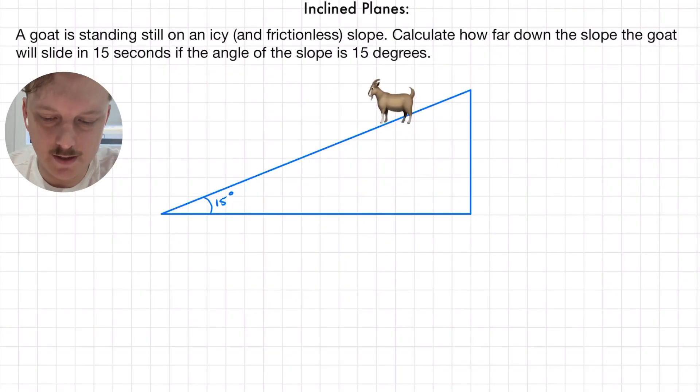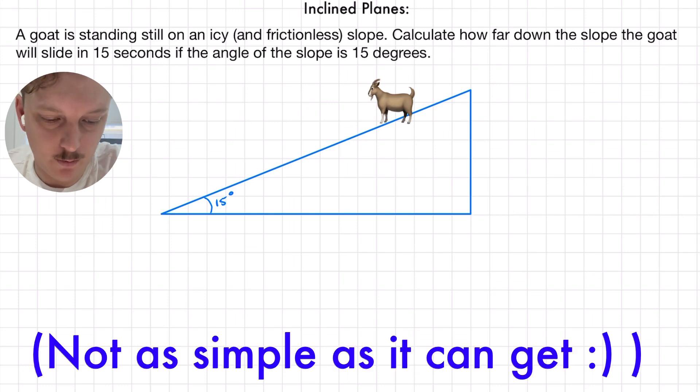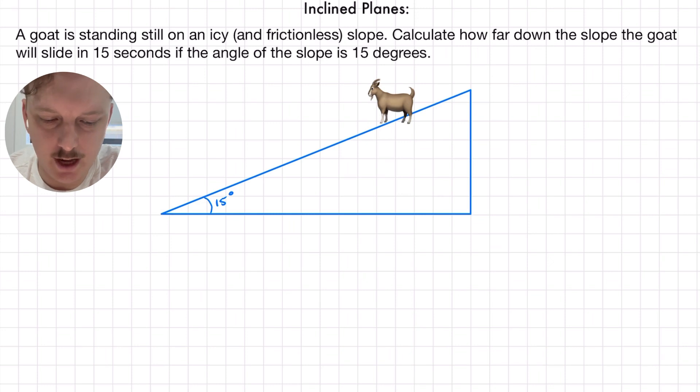Right, in our example here, it's as simple as it can get. We have a goat standing on an icy and frictionless slope. We have to calculate how far down the slope the goat will slide in 15 seconds, given an angle. So, I've added some complexity. But ultimately, if we want to figure out how far down it's going to slide, we need to know what the force is going to be, because the force will give us our acceleration, which we can then use to find our displacement.